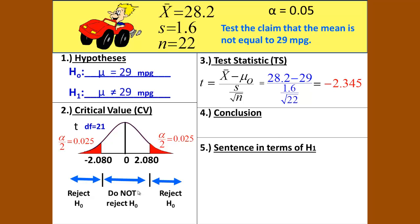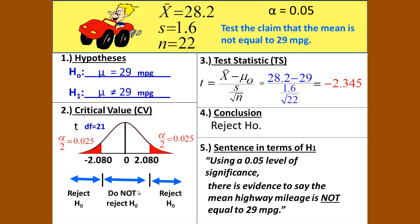Now let's graph that on our normal curve and we see that that falls below our critical value in the reject the H0 region. So our conclusion is that we should reject H0. Since we are rejecting H0, our sentence, starting with the same phrase, is: using a 0.05 level of significance, there is evidence to say that the mean highway mileage is not equal to 29 miles per gallon. And we copy that part straight from the problem.